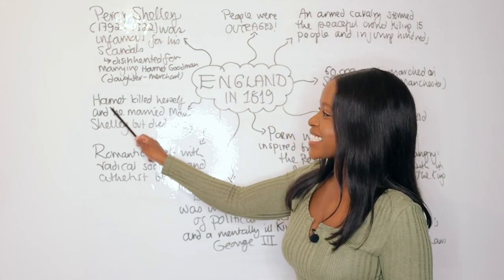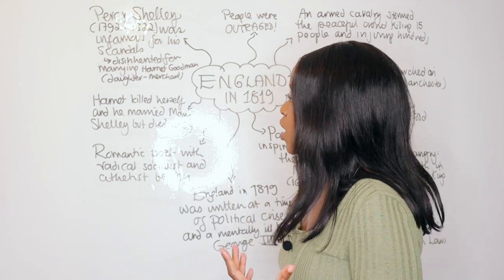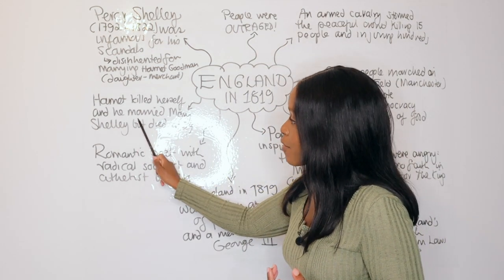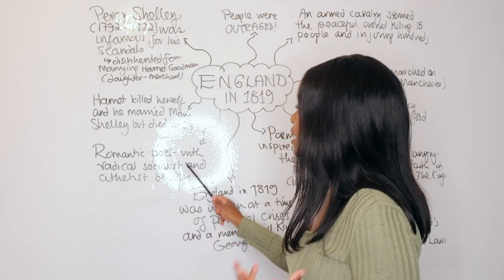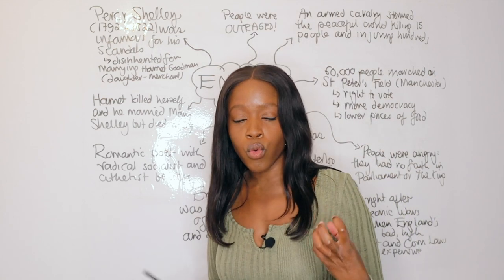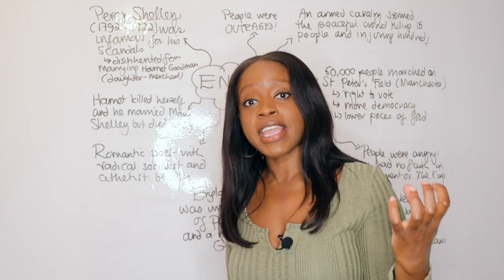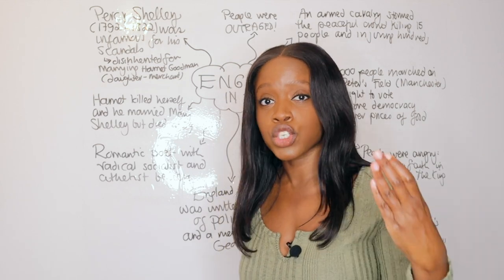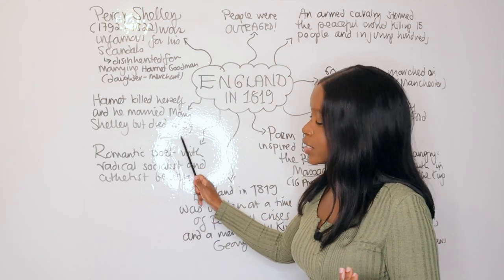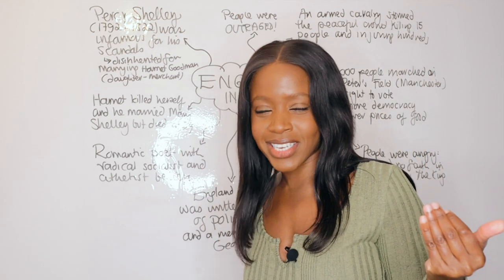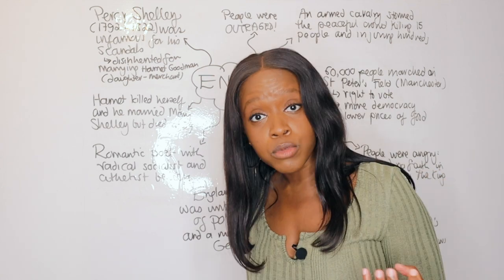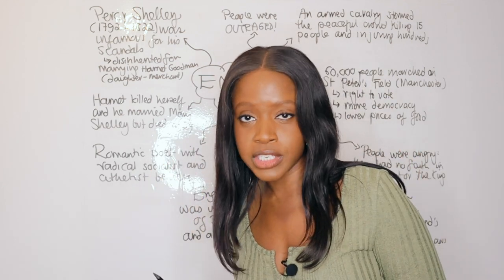Adding more to the scandal around Percy Shelley's life, Harriet — his first wife — ended up committing suicide. He then remarried, this time to a very famous author called Mary Shelley, who is famously known for being the author of Frankenstein. Finally, Percy Shelley died really quite early in his life — he didn't live very long. He died when he was 29 years old in a boating accident in Italy, drowning. His life was very short-lived.